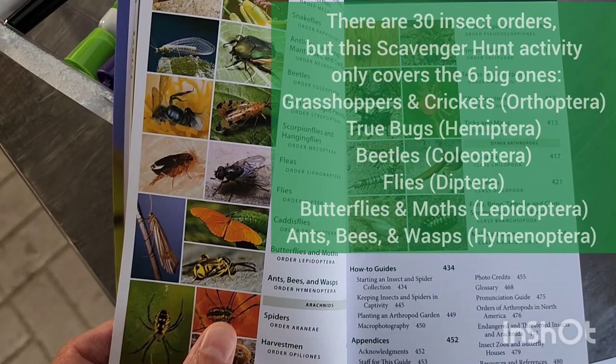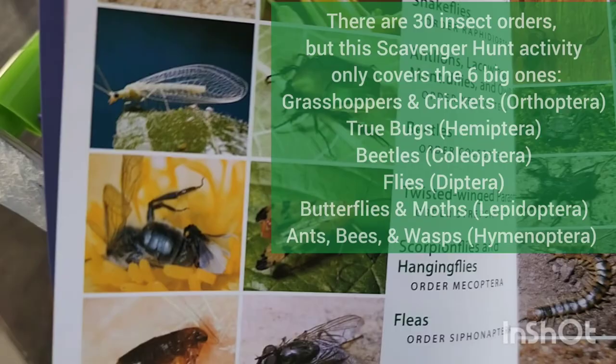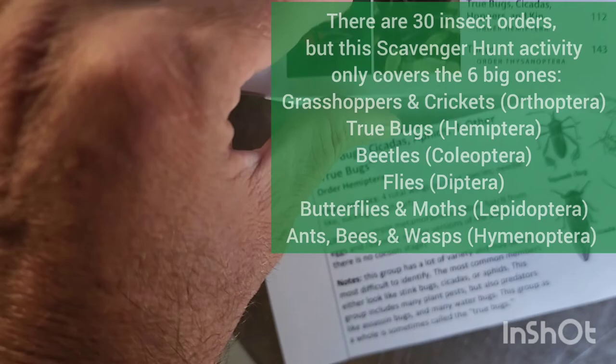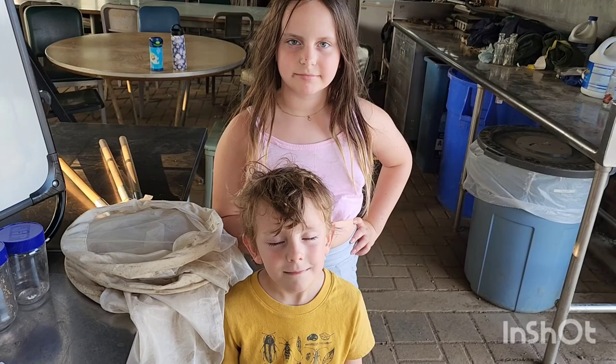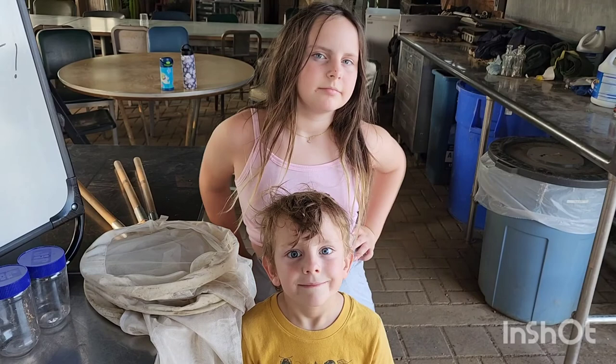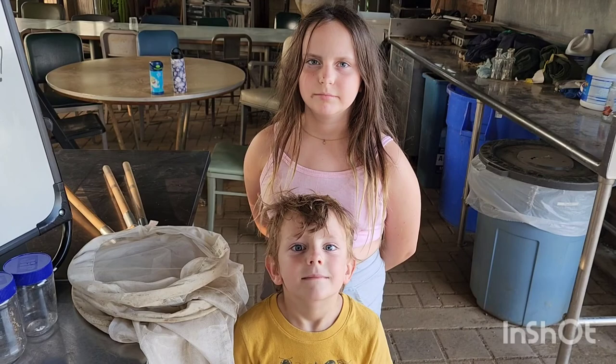One of those orders, for example, is beetles — order Coleoptera — or flies, order Diptera. Another one is grasshoppers, order Orthoptera. Laura and Reed are responsible for finding examples of and making a presentation on the insect order Hemiptera. The other orders in this activity are Coleoptera (beetles), Lepidoptera (butterflies), Diptera (flies), and a few others. But we're going to do Hemiptera today.